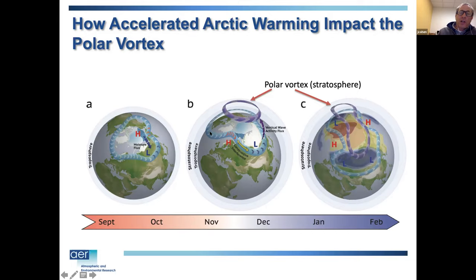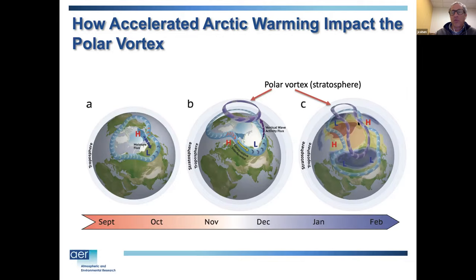This heating to the west and cooling to the east projects constructively onto the naturally occurring standing wave, increasing the wave activity flux — the Eliassen-Palm flux — from the troposphere. These Rossby waves escape from the troposphere into where the stratospheric polar vortex is, and the increased wave activity flux or polar heat transport disrupts the polar vortex, causing it to stretch or split into multiple pieces.